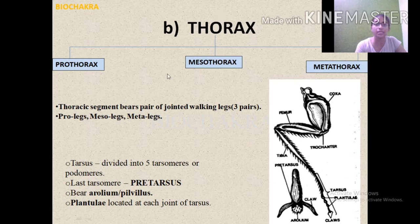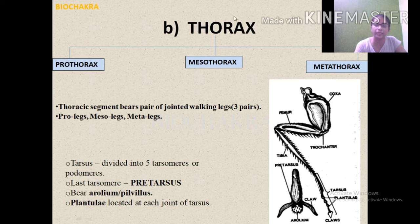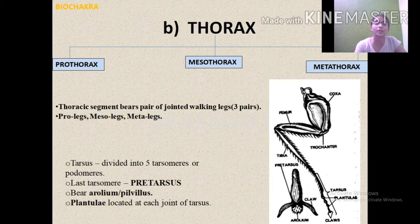The thorax is further divided into three segments: the anterior prothorax, the middle mesothorax, and the posterior metathorax. The thorax bears wings and legs. Each thoracic segment bears one pair of legs, giving a total of three pairs of legs — six legs in total.